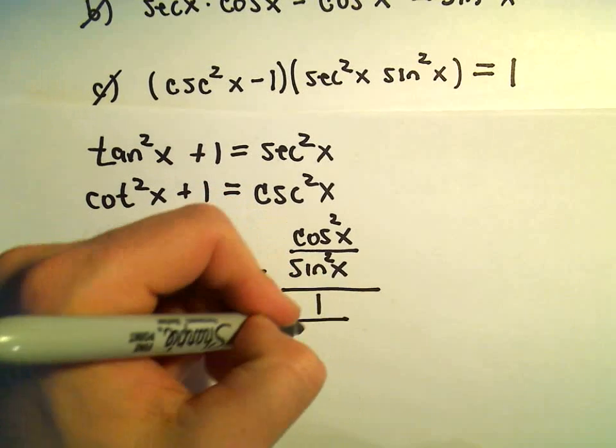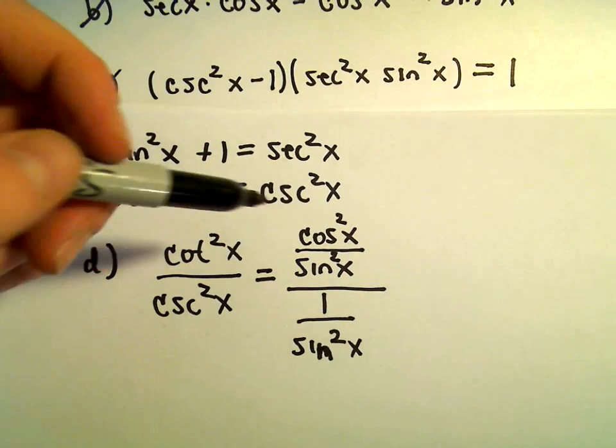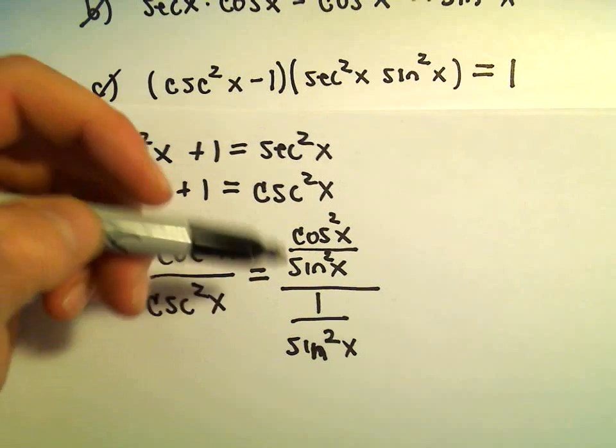Cosecant squared, that's 1 over sine squared x. So really I've got cosine squared over sine squared all over 1 over sine squared.